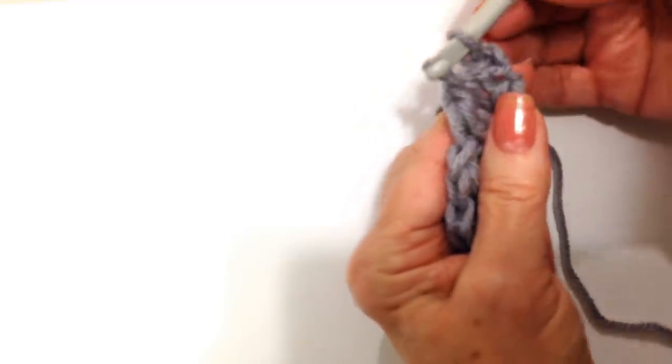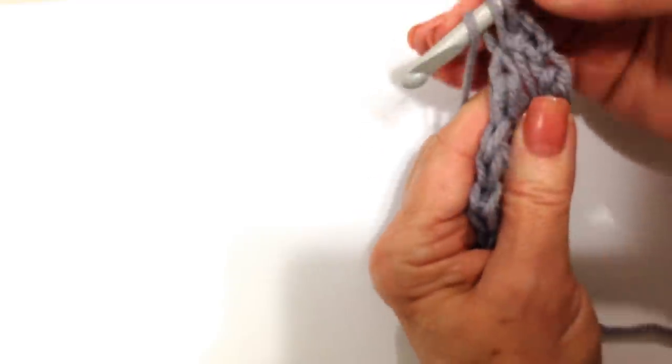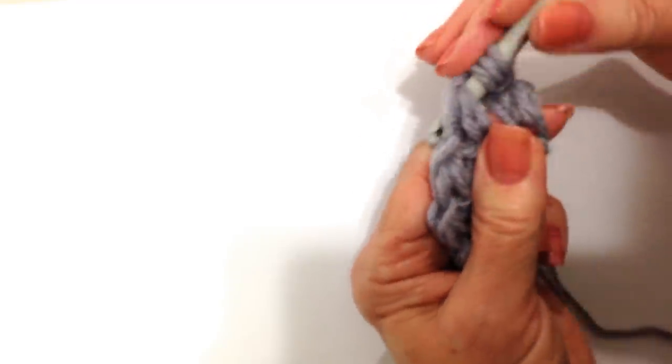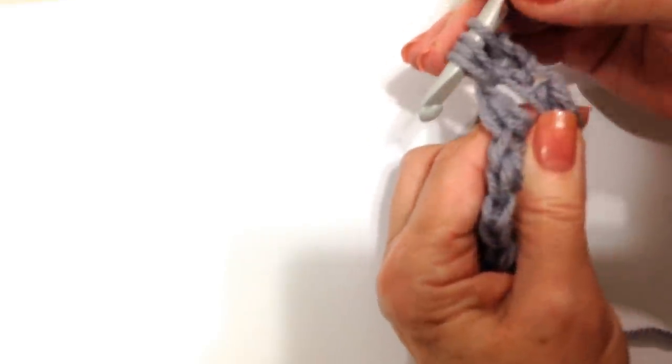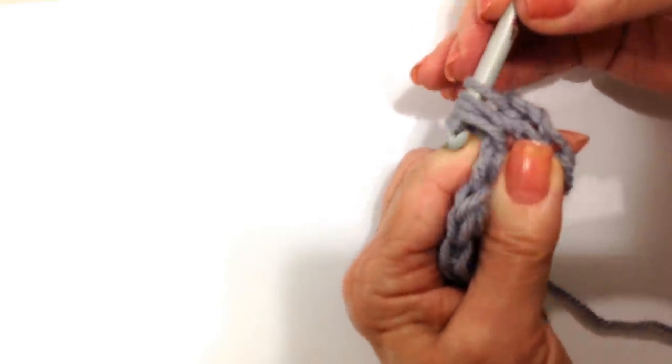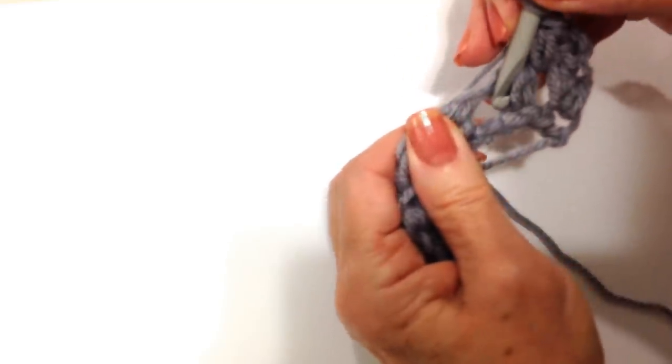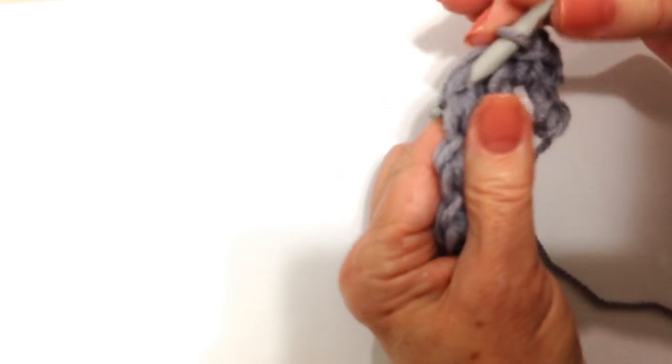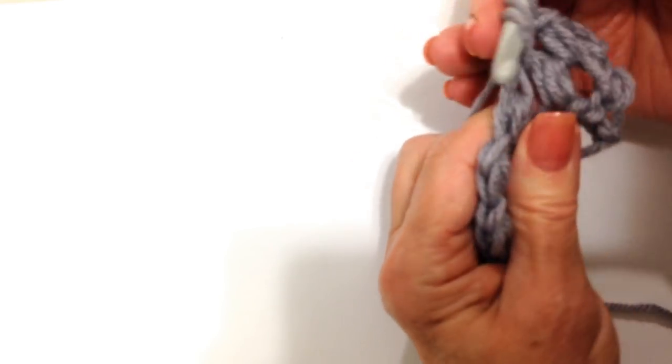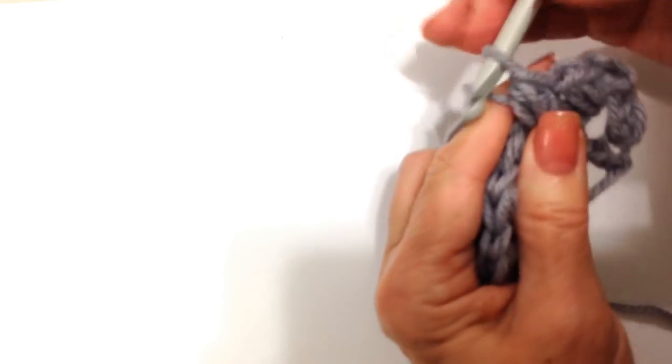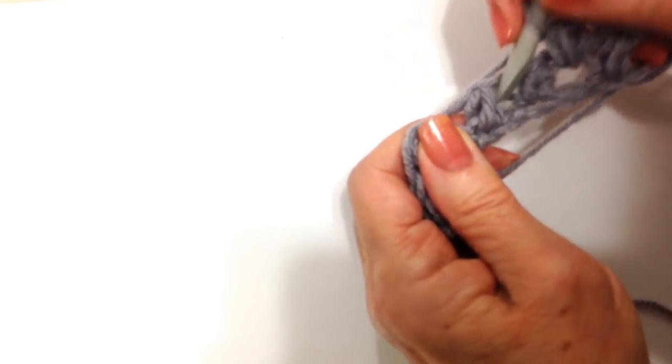Now find that first chain one space right here, and we're going to do the same thing. Insert the hook through the stitch and pick up the yarn. Yarn over the hook, back through the same space, pick up the yarn, pull it through. Pick up the yarn, pull it through. Pick up the yarn, pull it through all four stitches on the hook. Chain one. Go to the next chain one space, complete the same stitch. Chain one, next chain one space.